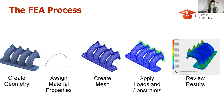This slide breaks down what a typical FEA workflow would include. First, you create or import your geometry. You then pre-process the geometry by defining your physics and meshing. Then solve and post-process your results. You'll analyze those results and decide what changes you may need to make to your design, and then repeat the process until you end up with your optimized design.